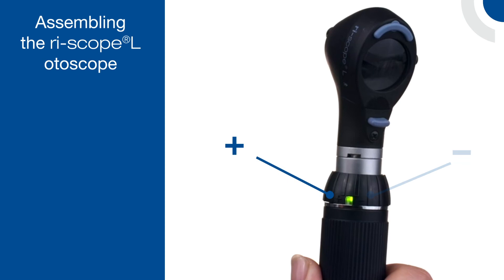There is a plus and a minus sign on the handle. Twisting clockwise or towards the plus symbol will immediately turn the device on to full power and a green light will illuminate.